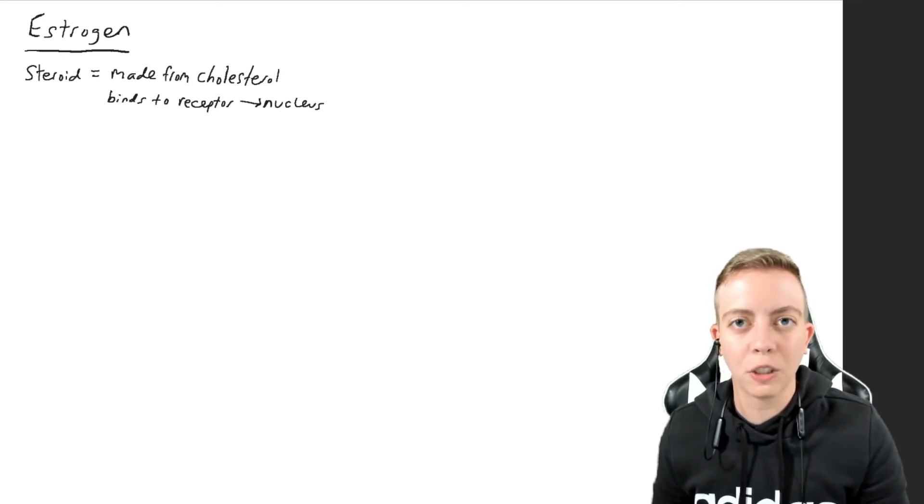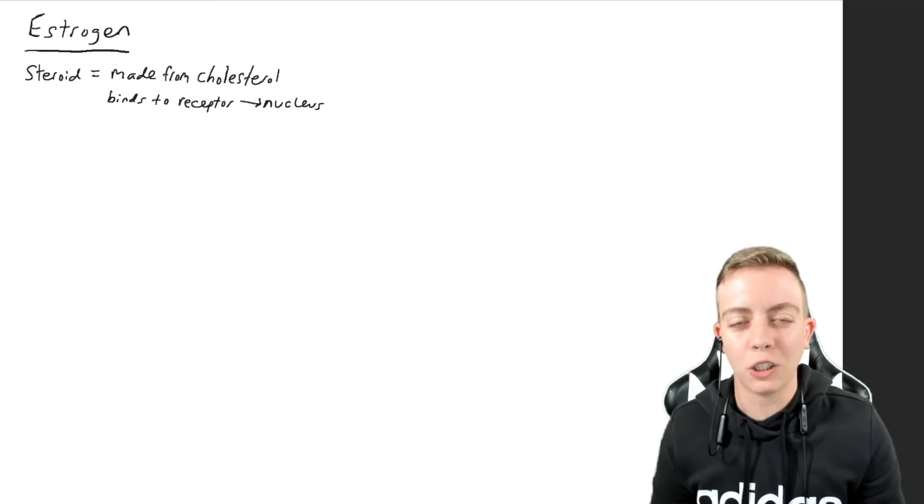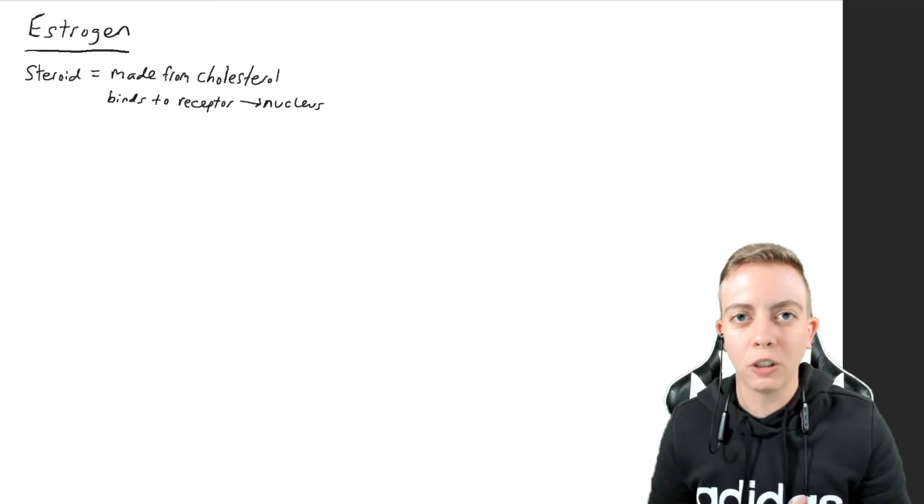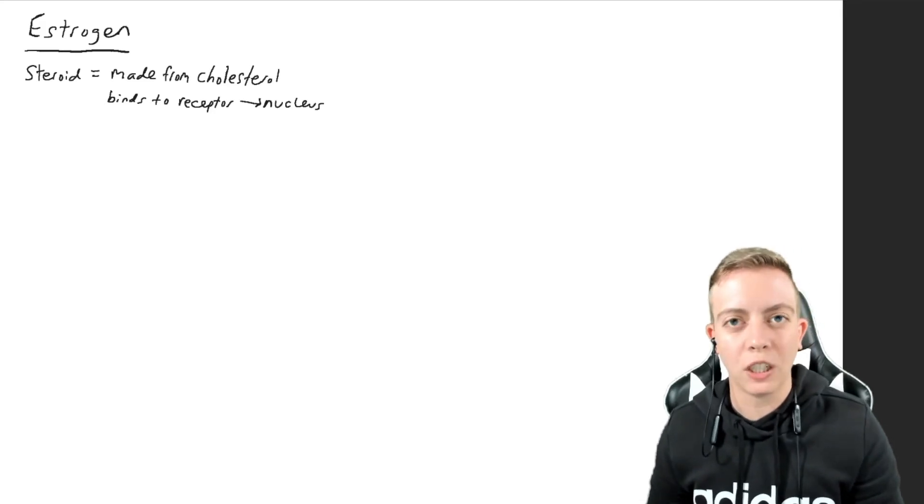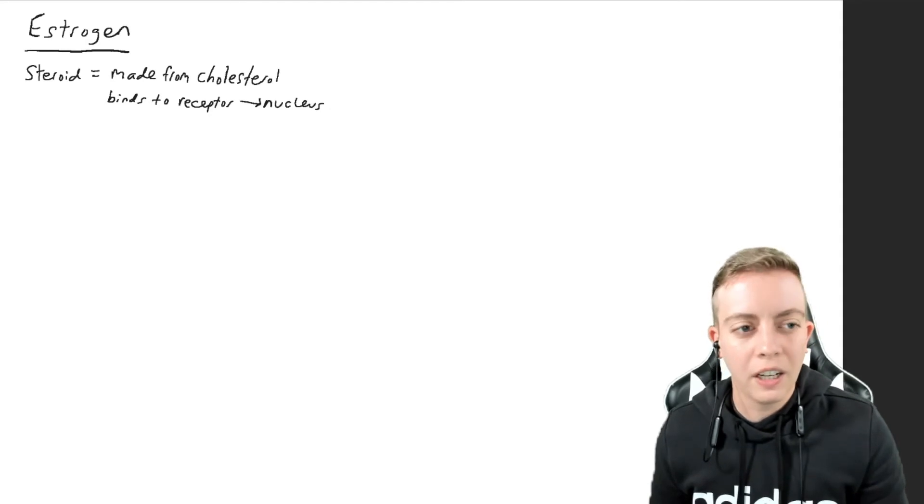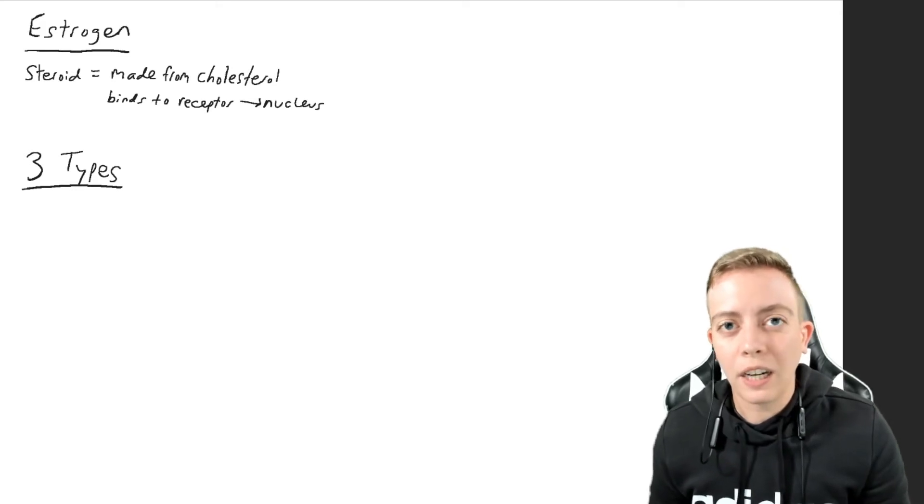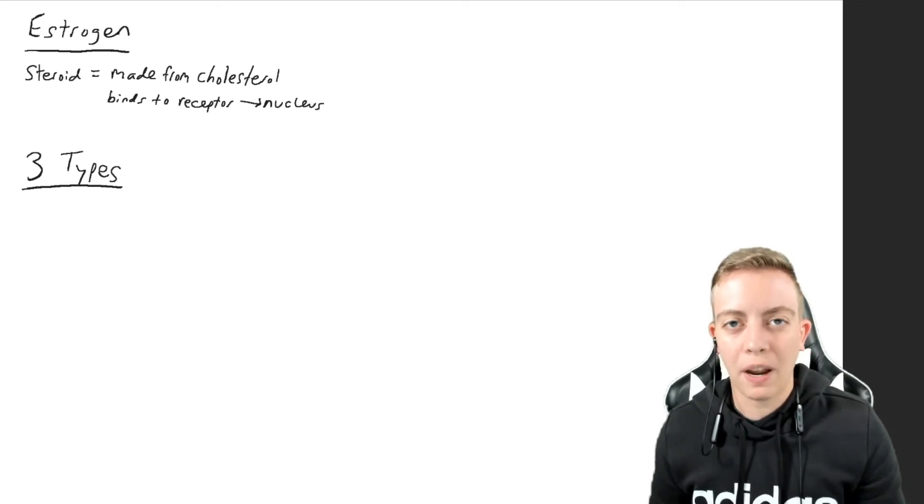If you've watched my videos about the adrenal gland hormones, you probably already know a lot about how cholesterol becomes steroid hormones. Today we're just going to do a broad overview of the different types of estrogen. There are three types of estrogen and you may know them as E1, E2, and E3, and each of them have very different functions and places where they are produced.